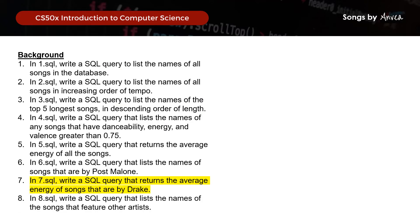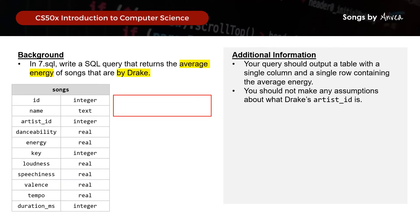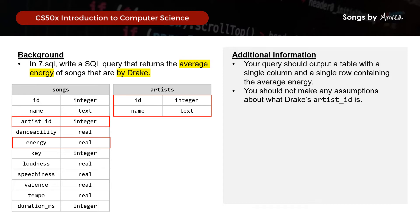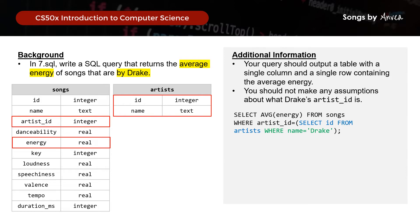Next, we want the average energy of songs that are by Drake. Similar to the previous query, we need information from both tables. So we will: SELECT AVG(energy) FROM songs WHERE artist_id = (SELECT id FROM artists WHERE name = 'Drake').